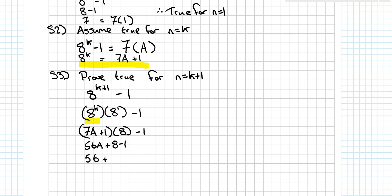7 times 8 is 56. So I have 56a plus 8 minus 1. 56a plus 7. And can I factorize out 7 from this? So I'm going to say, yes I can, 7(8a + 1).